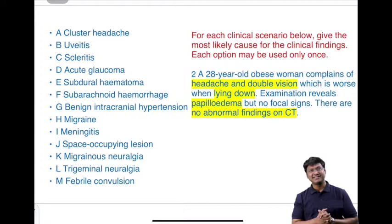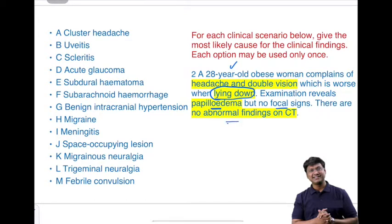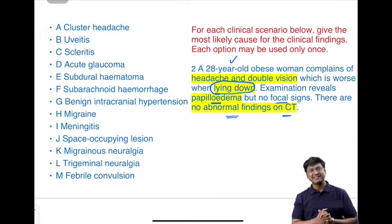The second clinical scenario is a 28-year-old obese woman complaining of headache and double vision, which is worse when lying down. Examination reveals papilledema but no focal signs, and there are no abnormal findings on CT scan. This is suggestive of benign intracranial hypertension.